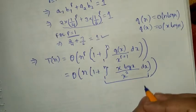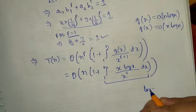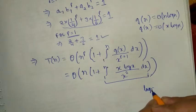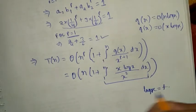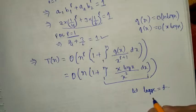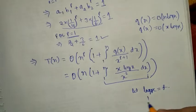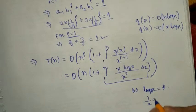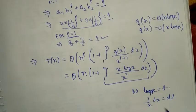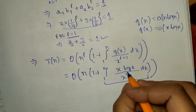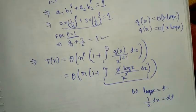We solve this integral using substitution. Let log x equal t, so 1/x dx equals dt. Inside the integral, we can cancel x, leaving log x over x dx, which becomes t dt.